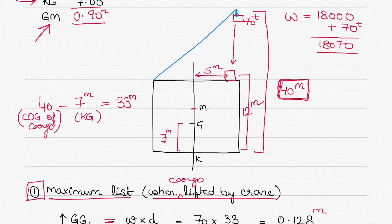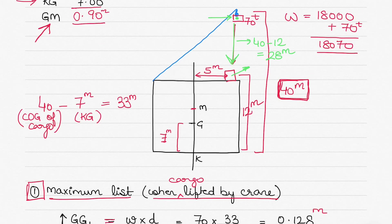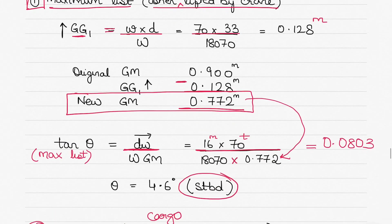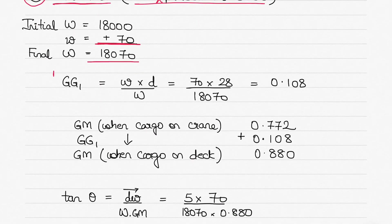The vertical distance the cargo has shifted: when on the crane it was 40 meters above keel, and now it is placed at 12 meters above keel. So the vertical distance = 40 − 12 = 28 meters. The horizontal distance for calculating list is 5 meters - that's straightforward. Have a look at the diagram carefully to understand how this distance was calculated.